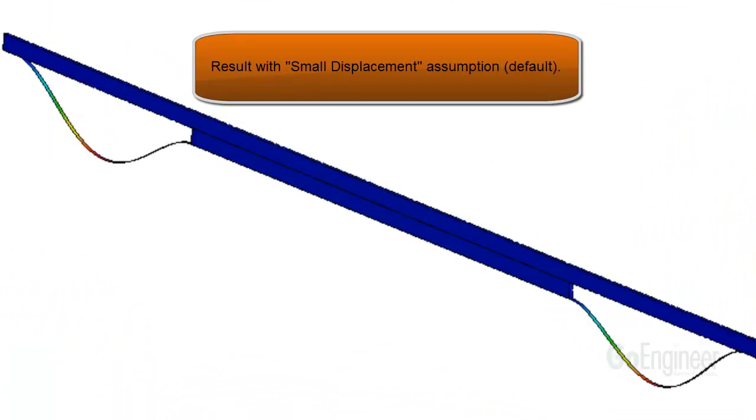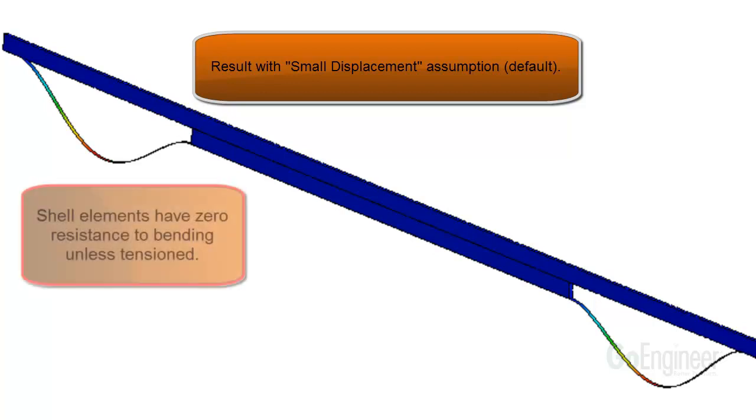Recall we used shell elements for the steel strap. Those shell elements, unlike the actual steel strap, have virtually zero resistance to bending. Therefore, if a load that causes bending, such as their own weight, is applied suddenly, they will bend quite easily.